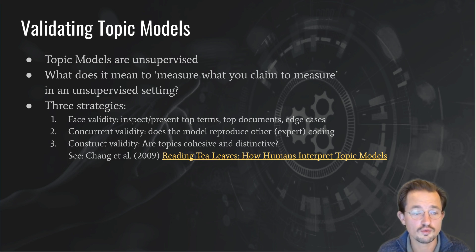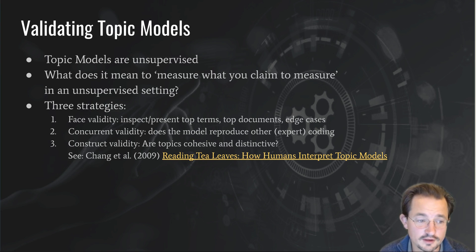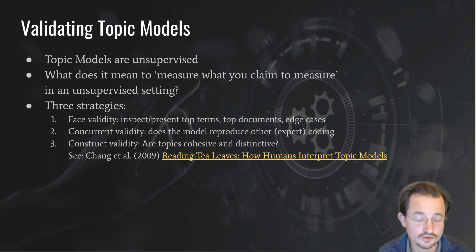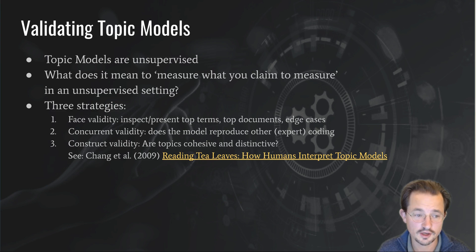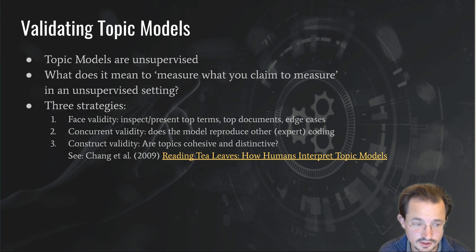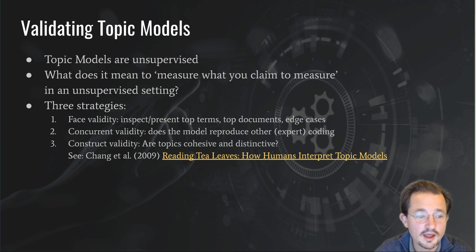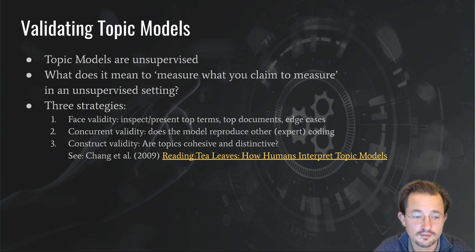So what do you do? You can look at construct validity and see whether the topics are cohesive — whether they have a coherence and a cohesive meaning to them — and whether they are distinctive, meaning you can truly distinguish one topic from another.